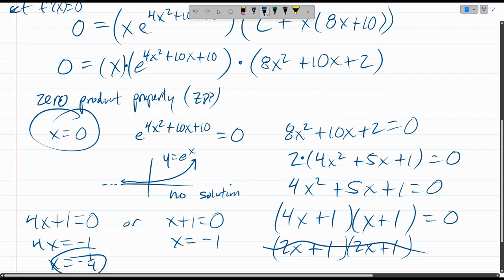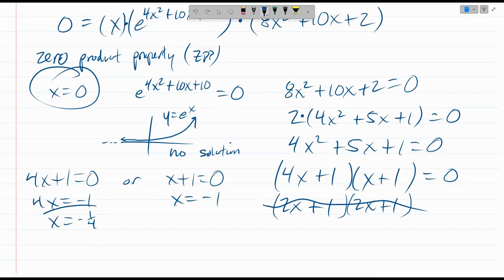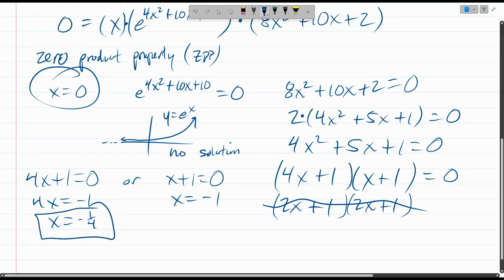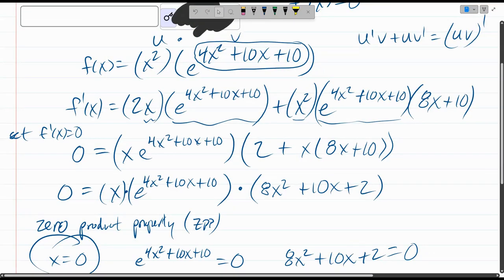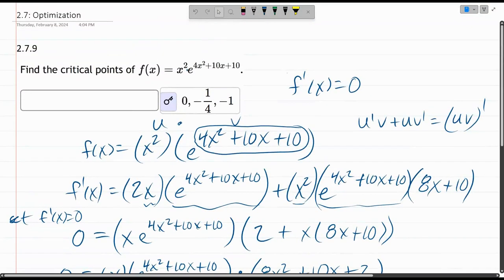All right. So we have bad circling. Wow. All right. Negative 1, negative 1 fourth and zero. Let's reveal the answer. Negative 1, negative 1 fourth and zero.